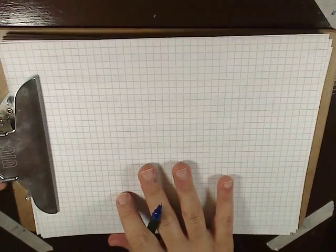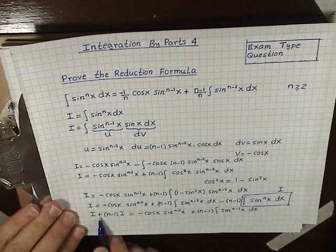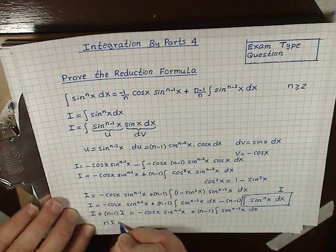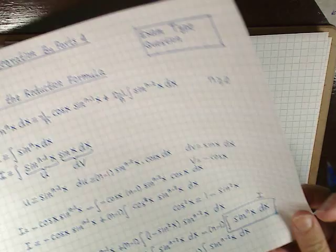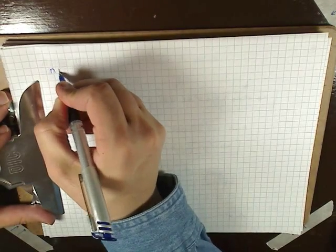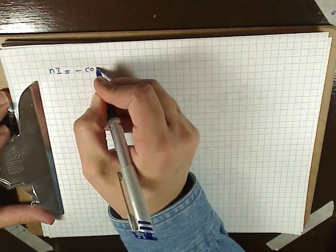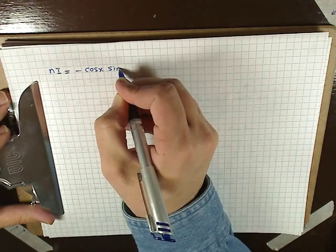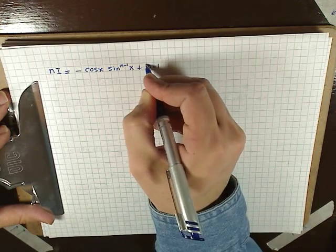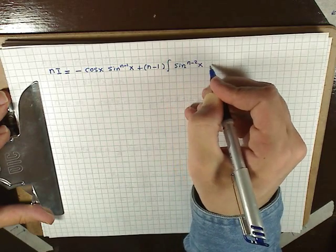If we simplify this, we have I + (n-1)I on the left. Expanding that, we just get n·I equals all of this. So: n·I = -cos(x) sin^(n-1)(x) plus (n-1) times the integral of sin^(n-2)(x) dx.